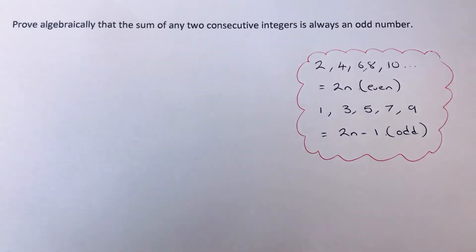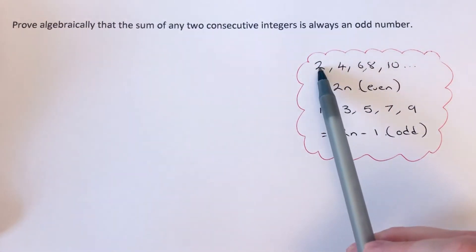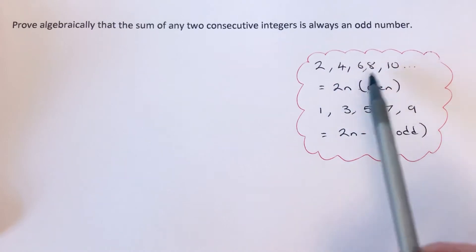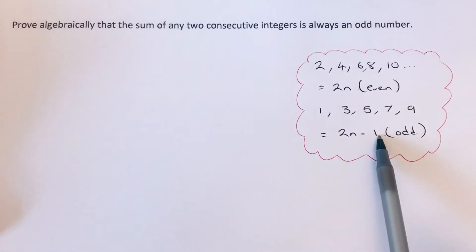So before you start this, you should know already that the nth term of an even number sequence is 2n, and the nth term of an odd number sequence is 2n-1. You could also use 2n plus 1 as well for the odd number sequence.